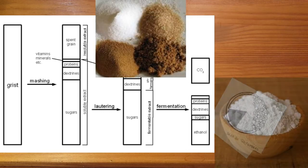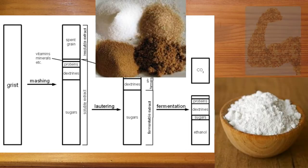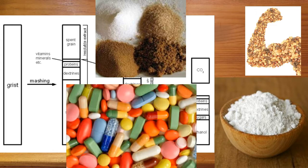Fermentable sugars, dextrins, better known as carbohydrates, proteins, vitamins and minerals, and spent grains.